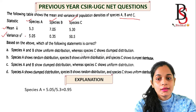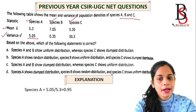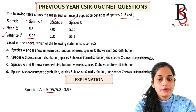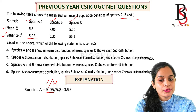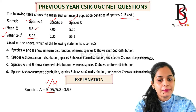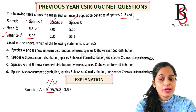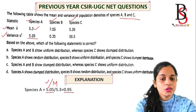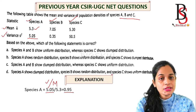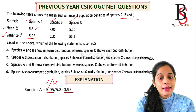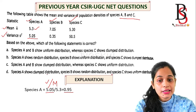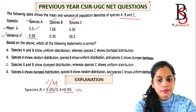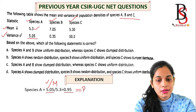For species A: variance is 5.05 and mean is 5.3, so 5.05 divided by 5.3 equals approximately 0.95, which is approximately equal to 1. If the ratio of variance to mean equals 1, the population shows random distribution. So species A shows random distribution.